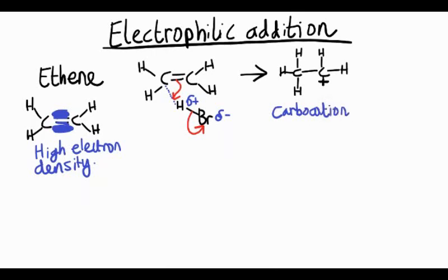Cation is a positively charged ion, and carbo means that carbon has a positive charge. It's an intermediate because it's a species that exists part way through a reaction. There's also a bromide ion which was formed when the HBr bond broke.